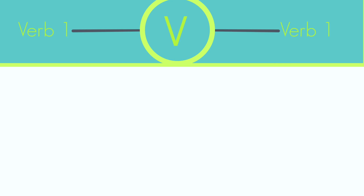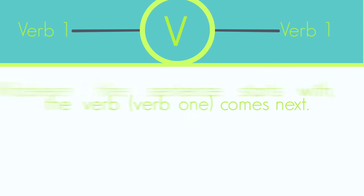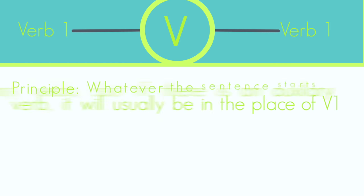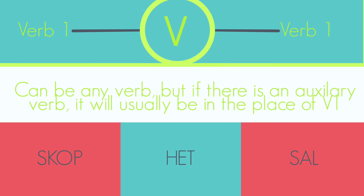The next letter is the silent V, and this stands for verb 1. There is a simple principle in Afrikaans, and this is, whatever the sentence starts with, the verb comes next. The first verb in Afrikaans sentences can be any verb, but if there is an auxiliary verb, such as het or sal in a sentence, they will usually be in the position of verb 1.